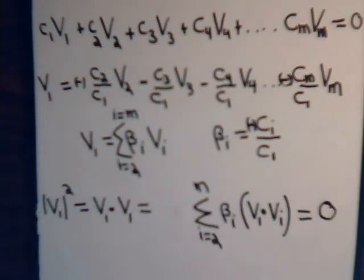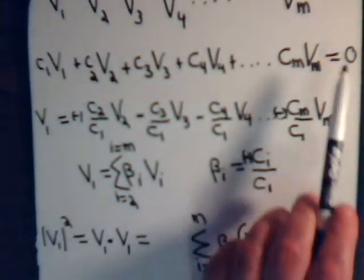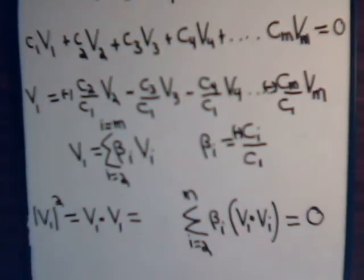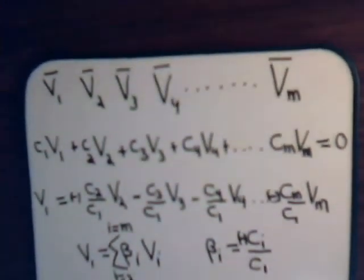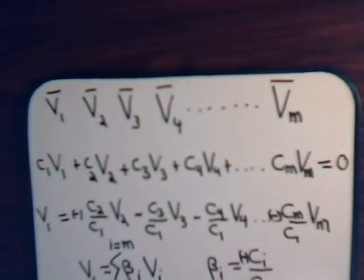So what we found is if we assume that these orthogonal vectors are linearly dependent, and without loss of generality, we could say this would be one of them that has a constant that's non-zero, but if we do that, all we end up with is the zero vector. So if we have a series of vectors that are non-zero and they're orthogonal, they cannot be linearly dependent. Therefore, they have to be linearly independent.